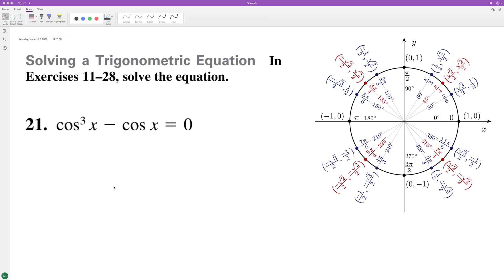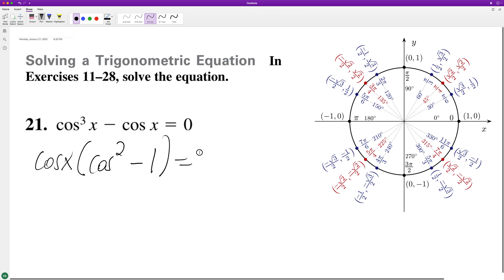To solve this problem for x, first thing to make this easier is we can factor out a cosine. We end up with cosine x times cosine squared minus 1 equals 0. So we need to figure out where cosine is equal to 0 or cosine squared is equal to 1.